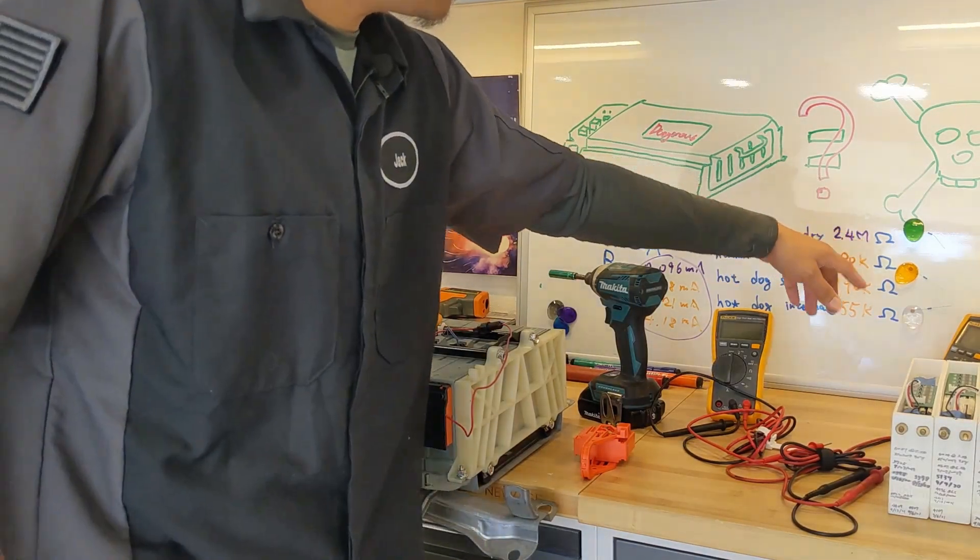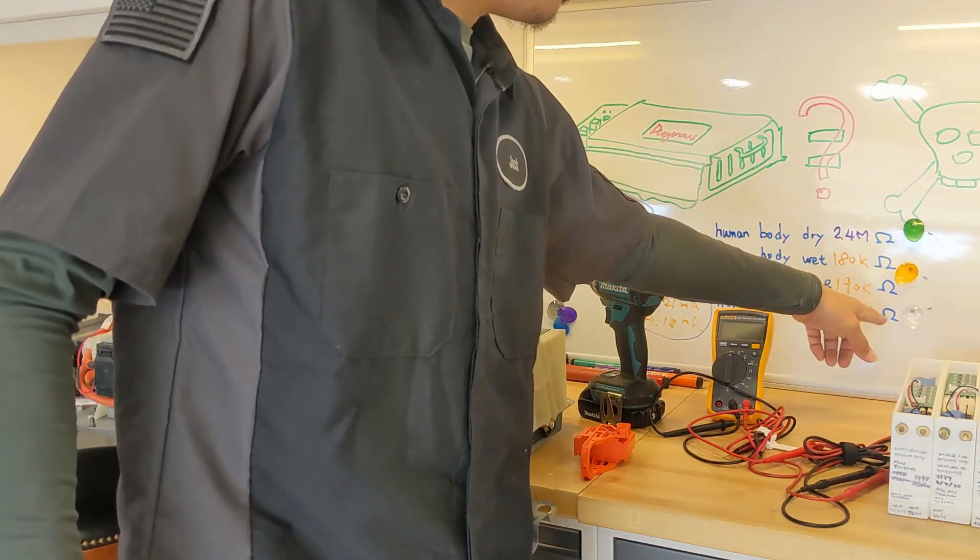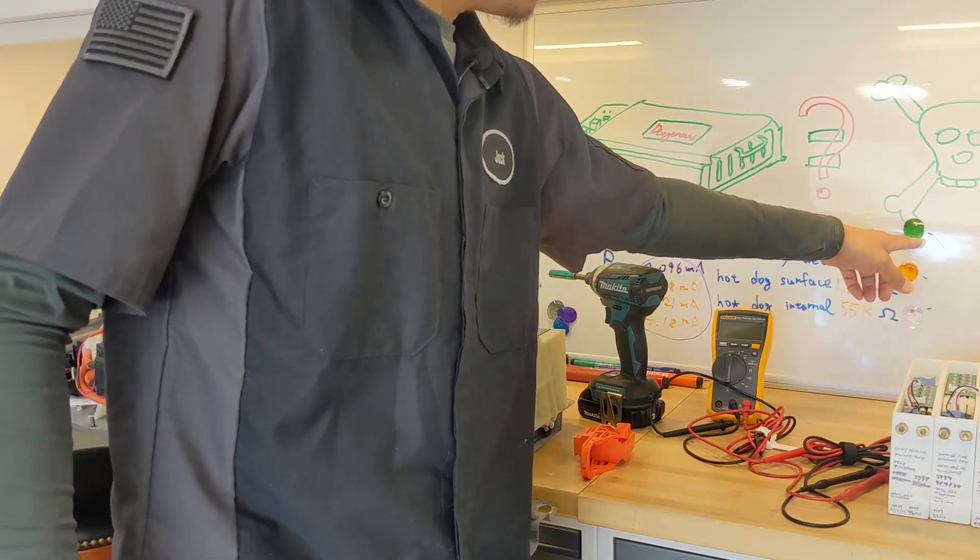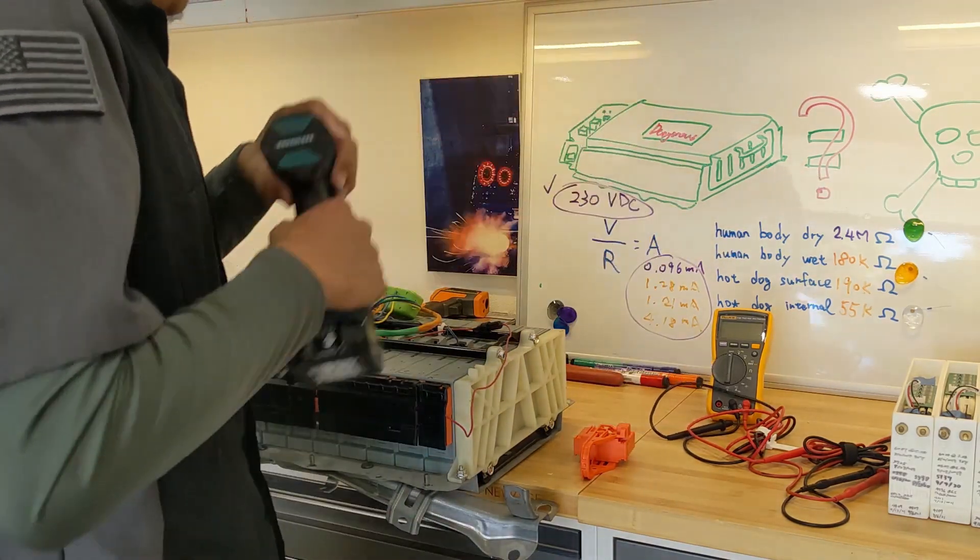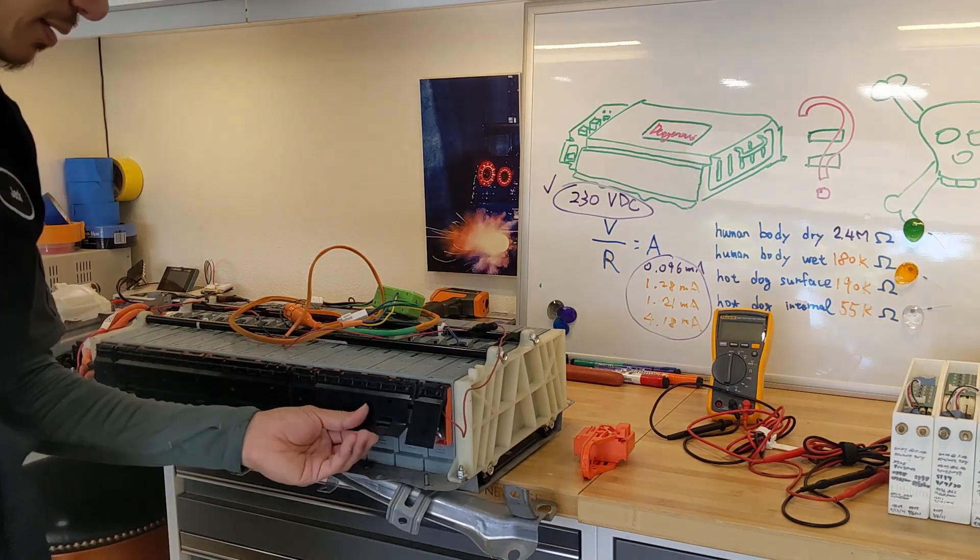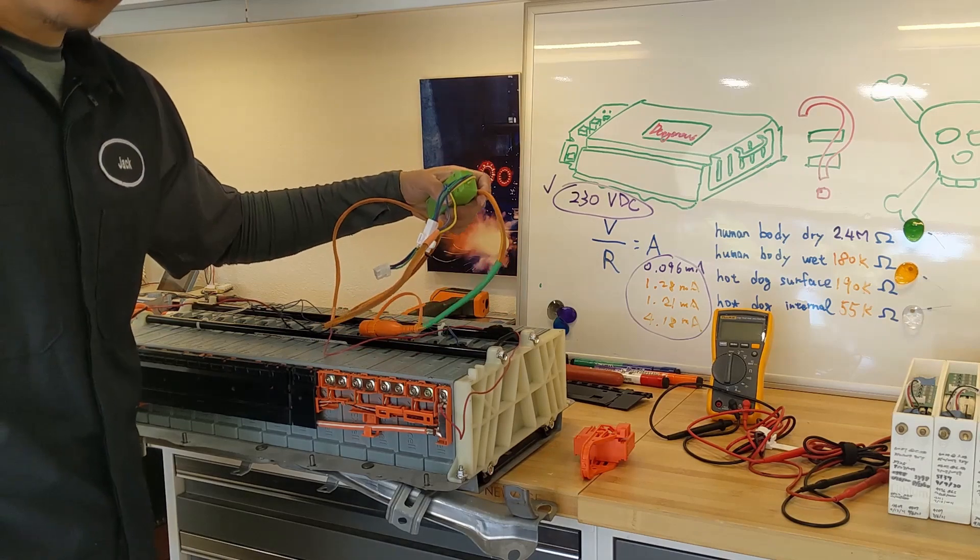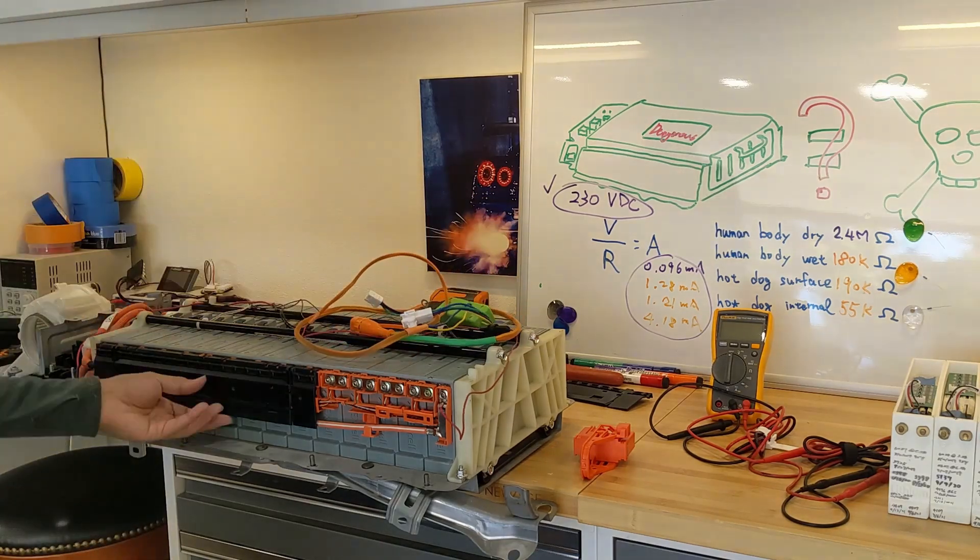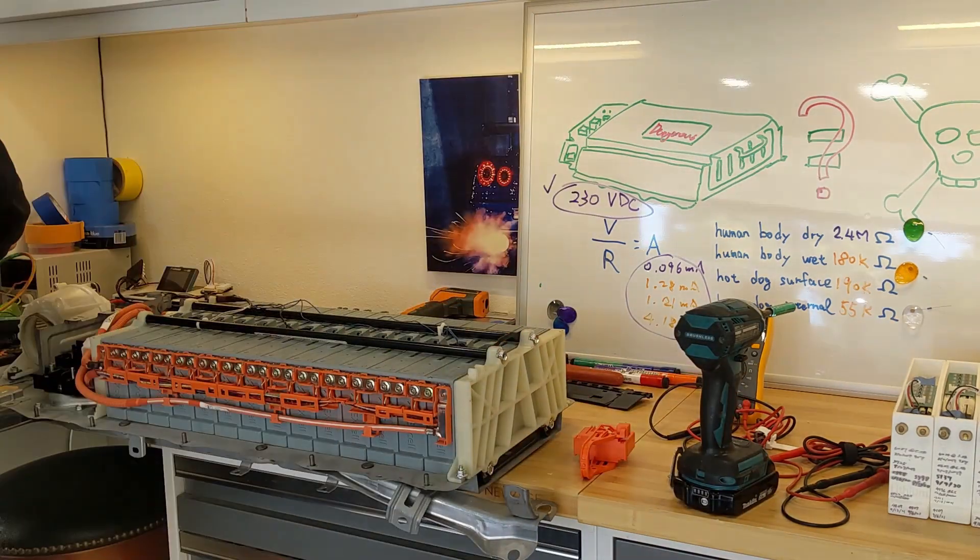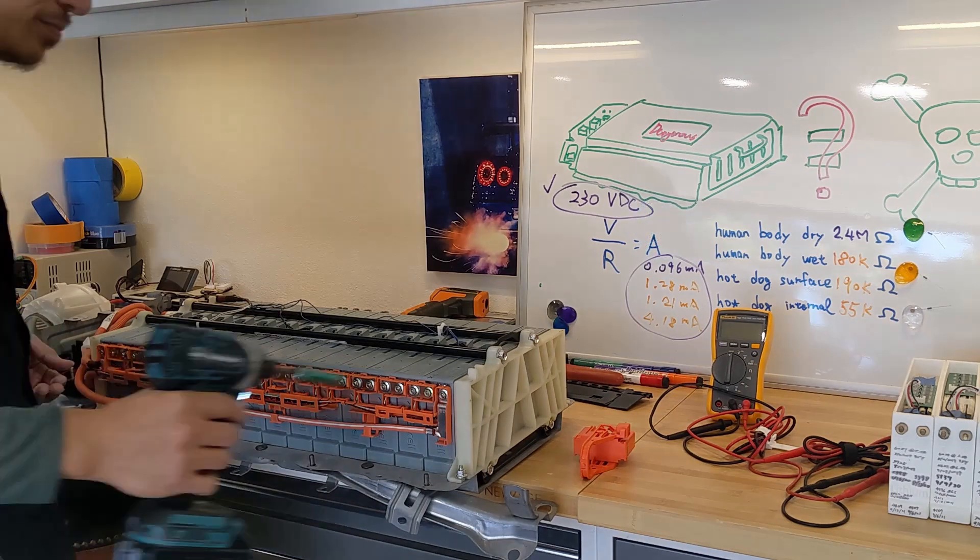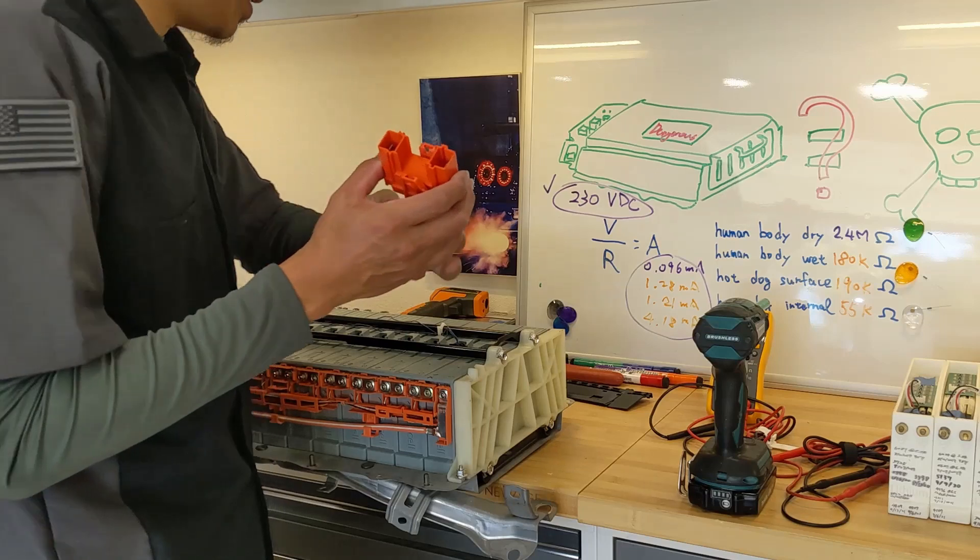Alright, so we have our resistors picked out over here: 2.4 mega ohm exactly, 180k, and 56k. These represent four different conditions. So this is our lithium battery over here. I have the Polon charger hooked up right now. Let me take it off. This is for another video that's coming up soon.